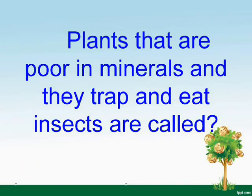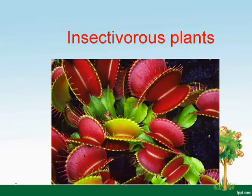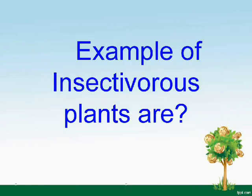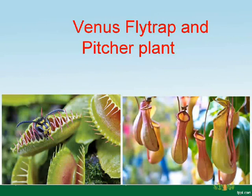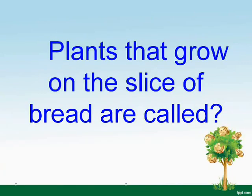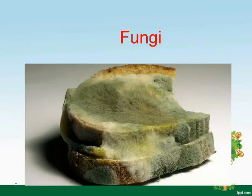Plants that are poor in minerals and trap and eat insects are called insectivorous plants. Examples of insectivorous plants are Venus flytrap and pitcher plant. Plants that grow on a slice of bread are called fungi.